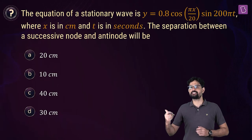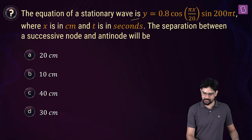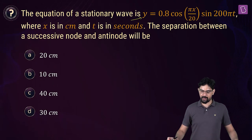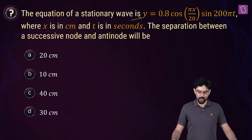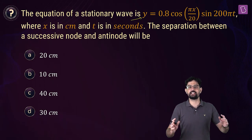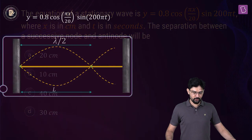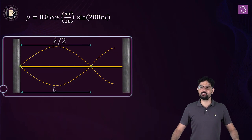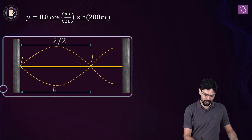For a standing wave given by the equation y = 0.8 cos(πx/20) sin(200πt), we simply have to find the separation between a successive node and antinode. The separation between two nodes is λ/2.